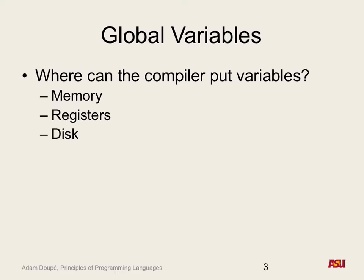You could store global variables on disk — your program could write global variables to a file, and when you want to read it, read it in from the file; when you change it, write the new value. The downside is it would be slow. SSDs are a bit faster than spinning disks, but much slower than memory.